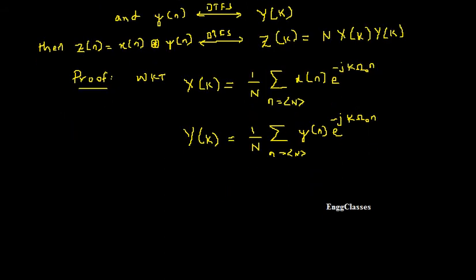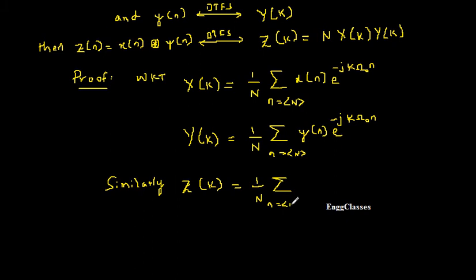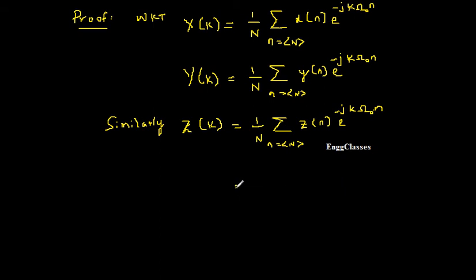Similarly, Z of k is equal to (1/N) summation over range N of z of n times e to the power minus j·k·ω₀·n. Now I will substitute for z of n, which is equal to x of n circularly convolved with y of n.